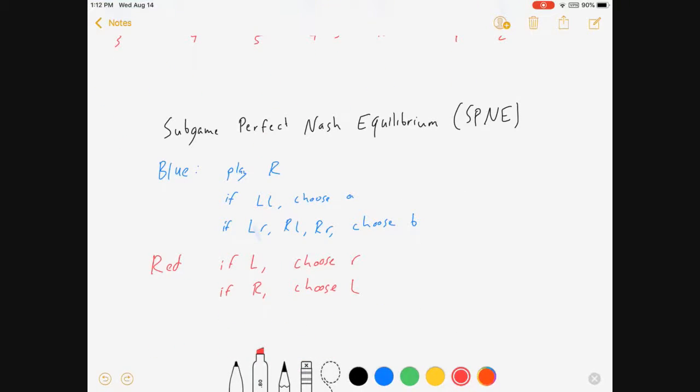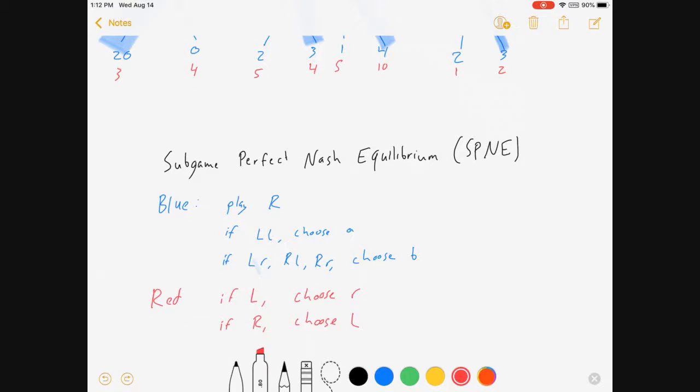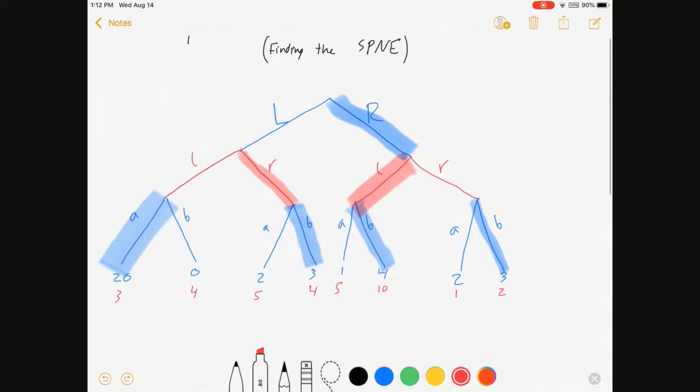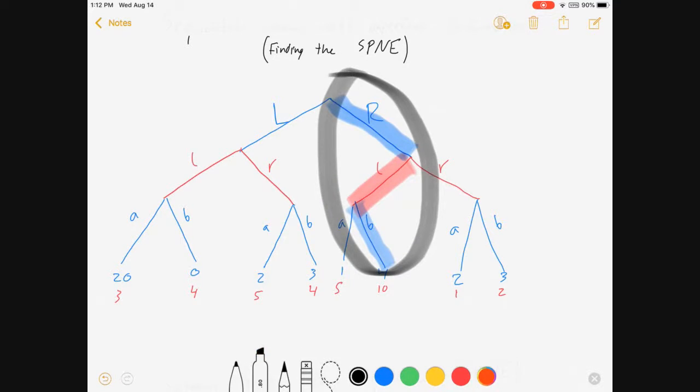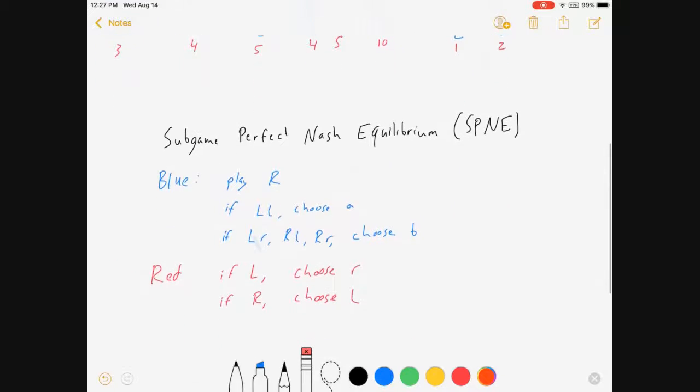And so with all that, what is the actual outcome we expect, our Nash equilibrium outcome? I recognize that all of these strategies that I am currently erasing are all part of the Nash equilibrium strategy. But this is what I expect to be my Nash equilibrium outcome. And so it should look something like this.